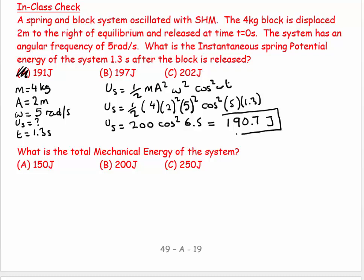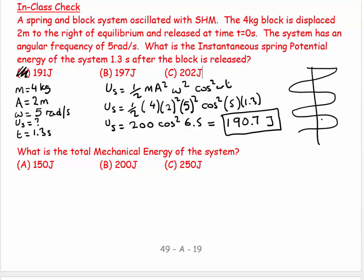So at that instant in time, we released the block and picked a certain moment to ask: what is the spring potential energy? We were able to figure it out — approximately 191 joules at t = 1.3 seconds.